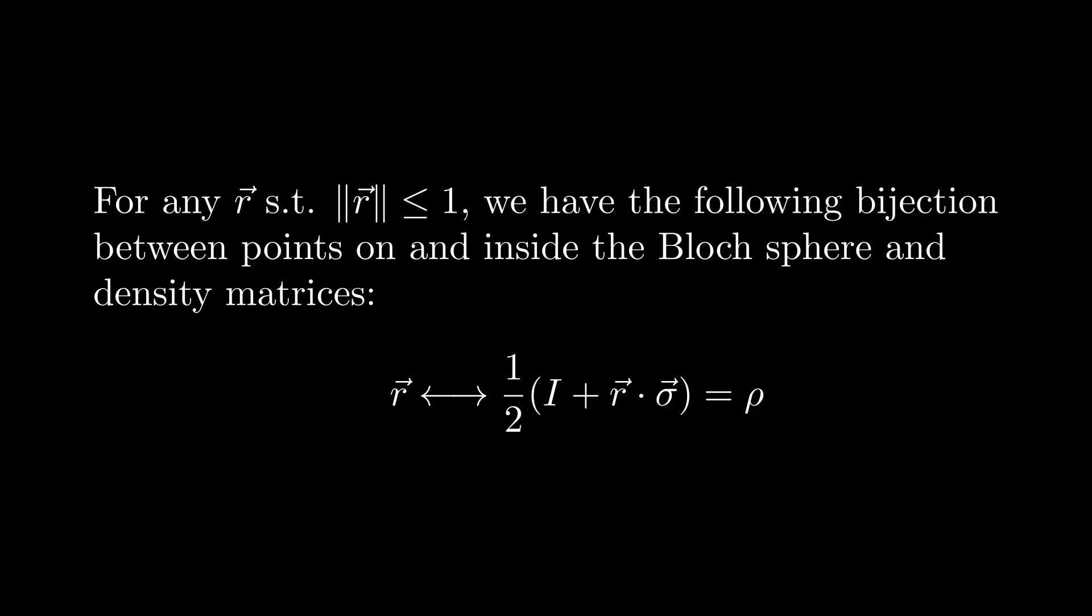So overall, we have that with this parameterization, we can effectively map any point in the Bloch sphere, including points on the surface and those inside the sphere, to any state, whether that's a mixed state or a pure state, and vice versa. So we effectively have a bijection.